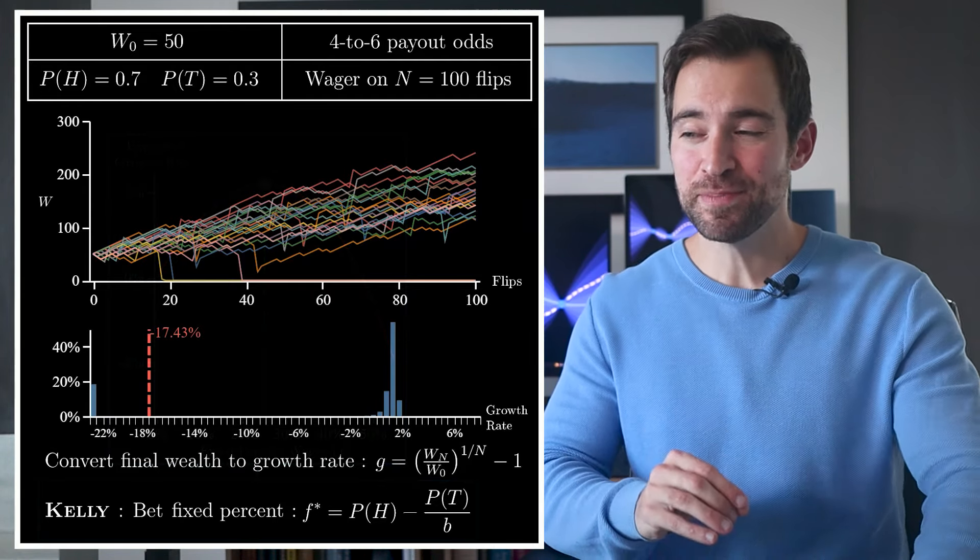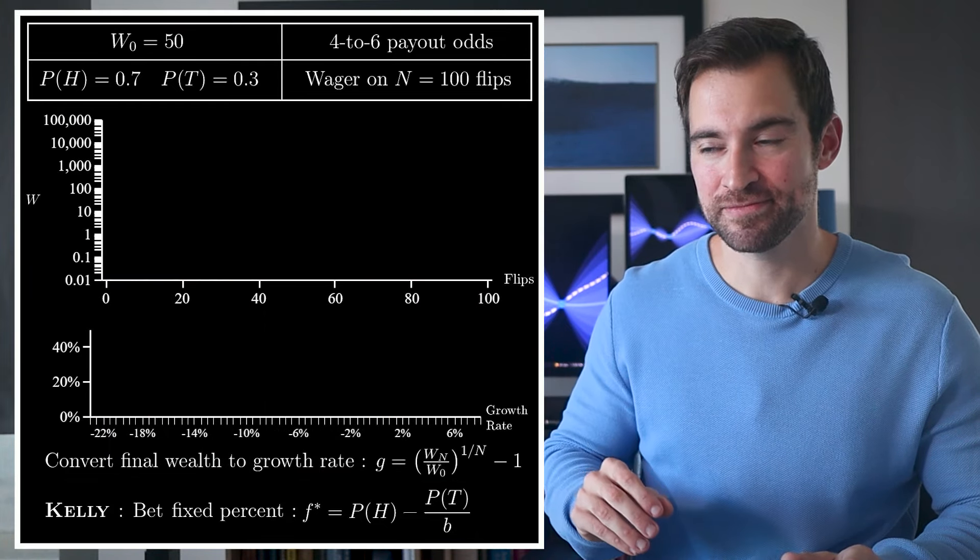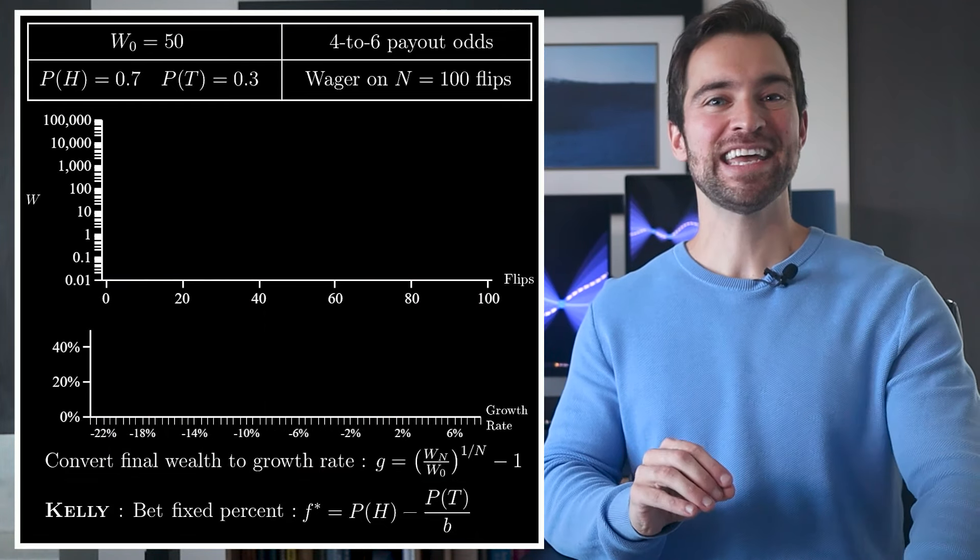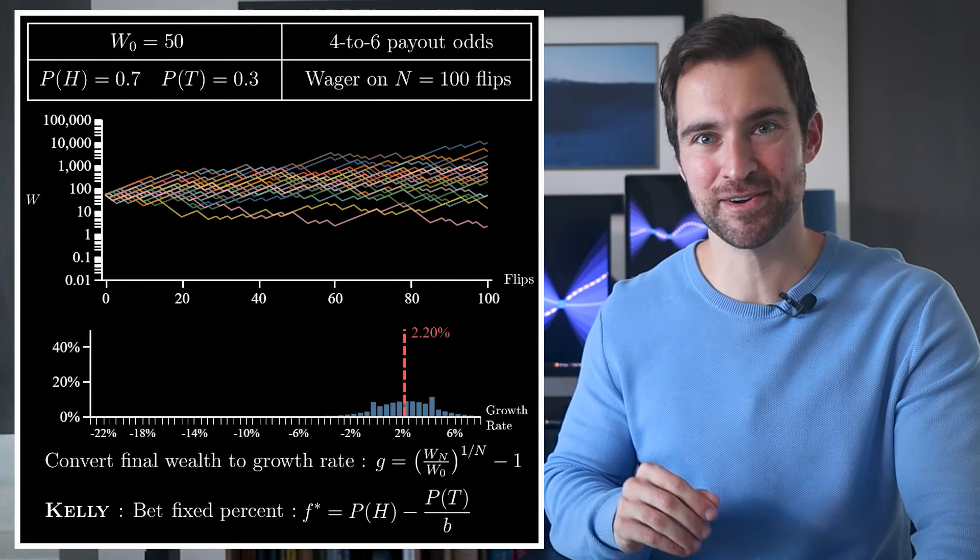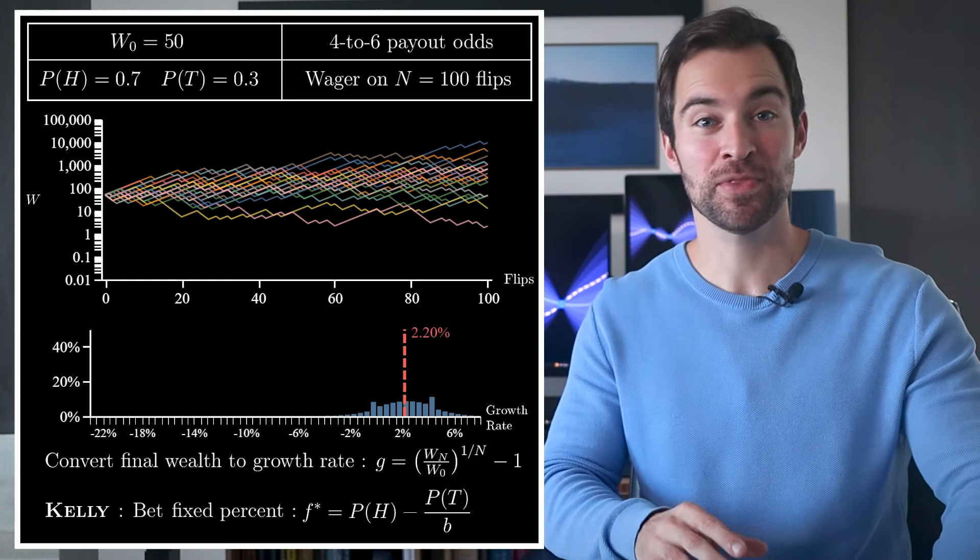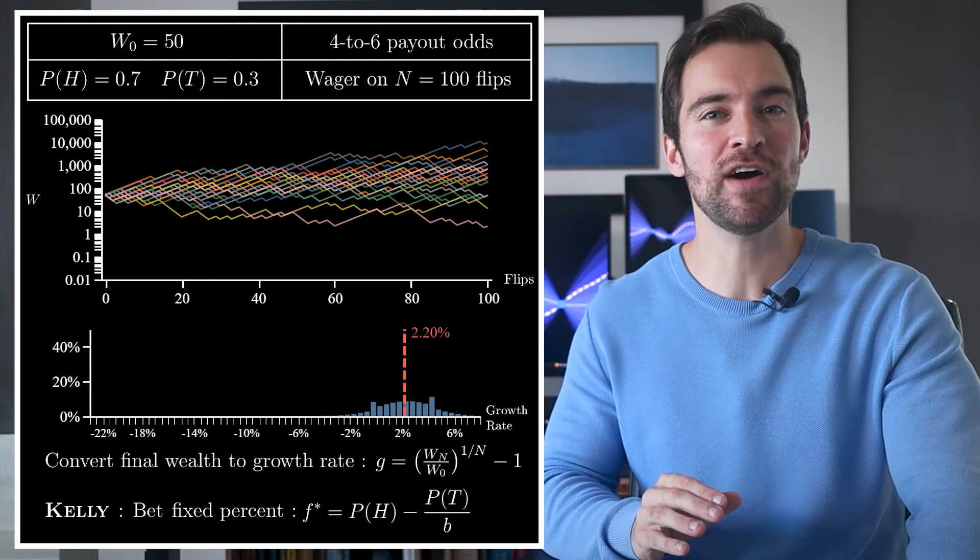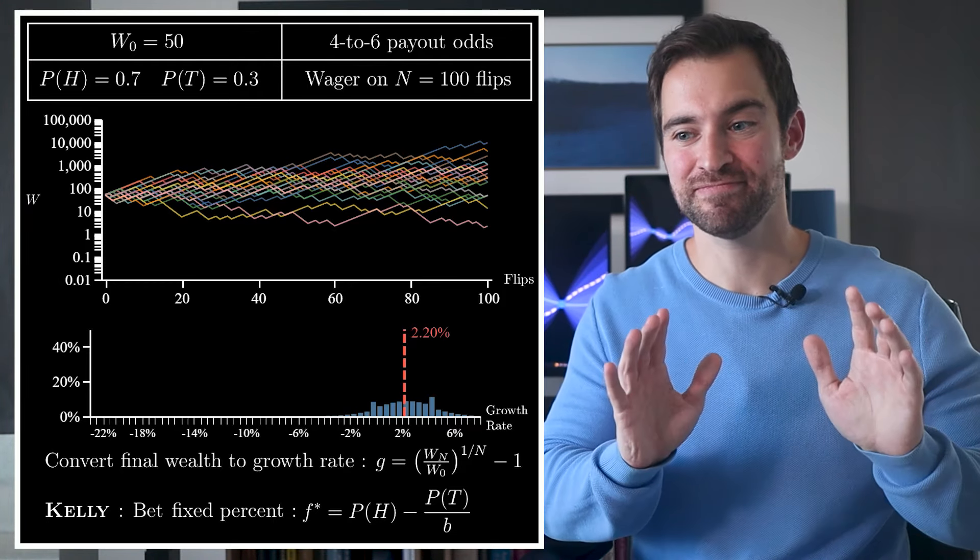So let's see how this strategy does. But first, because it's such a killer strategy, we actually need to plot our wealth on a log scale. Okay, so Kelly gives us results like this. Not bad at all. Our expected growth rate is nearly two and a quarter percent on each flip. A growth rate like that would give you a final wealth around $450 after 100 flips. Excellent.